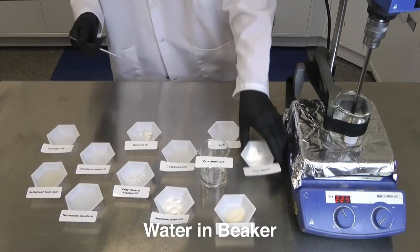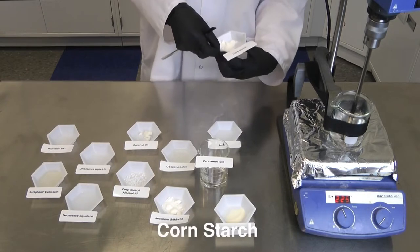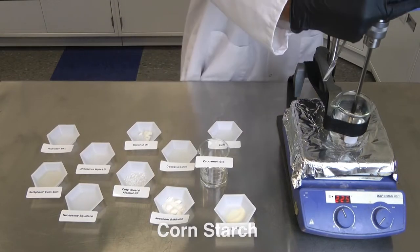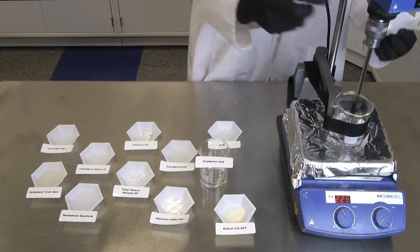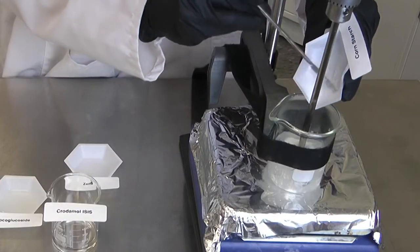The first ingredient that we have in the beaker is just DI water for this lotion, and the first thing that we will add to the water is a little bit of cornstarch. This is going to help reduce the tackiness and oiliness in the final lotion and it can also help to pacify it.